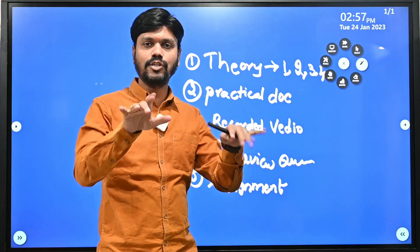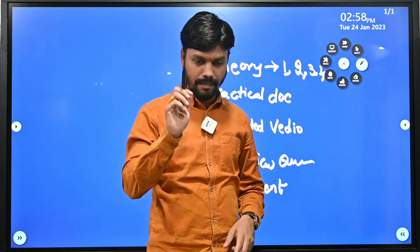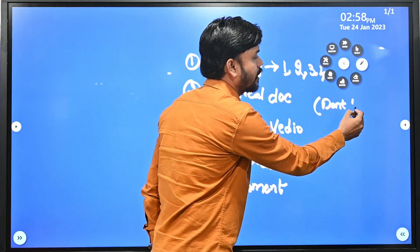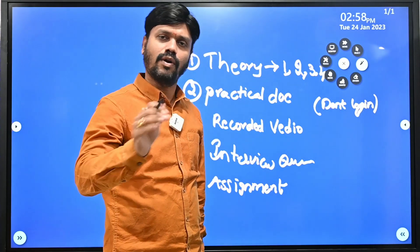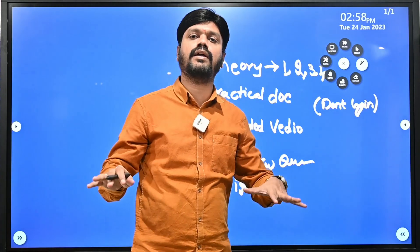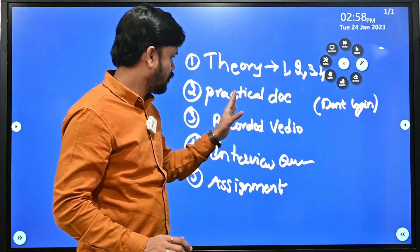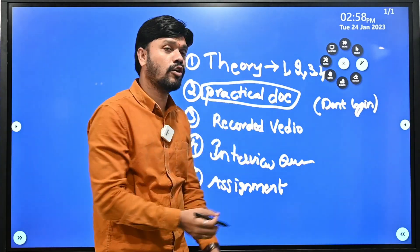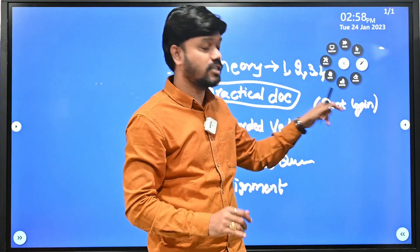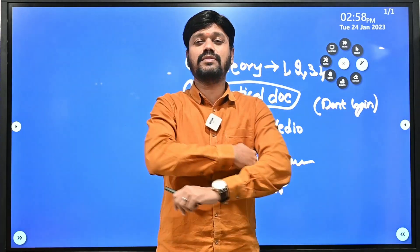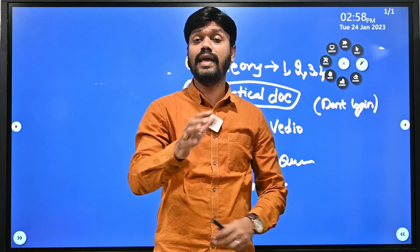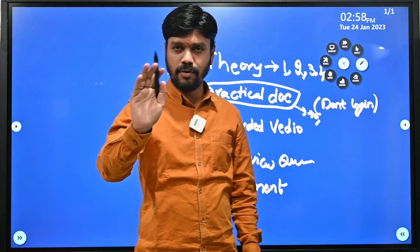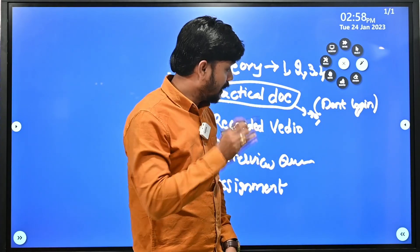99 percent of people directly open the practical document, start from screenshot one to screenshot N, and struggle. What you need to do instead: when you open the practical document, do NOT log into your software — never log in first. Whether you are learning C language, Pega, Java, or any software, first understand the practical requirement that is given to you. Then go through the document screenshot by screenshot, but do it in your brain, not on your system. Go through it once, then a second time.